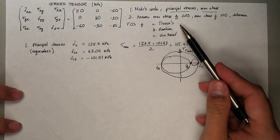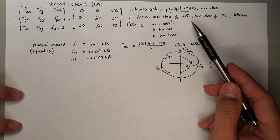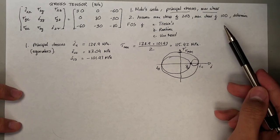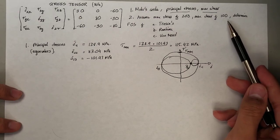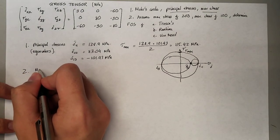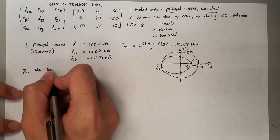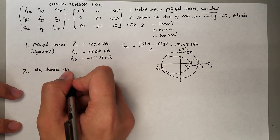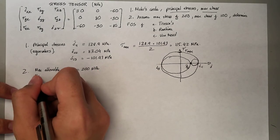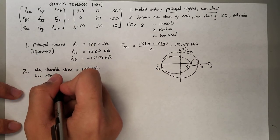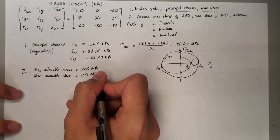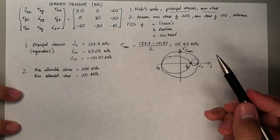In the second part of this problem, you are asked to determine the factor of safety for three different formulations. The maximum allowable stress is 200 MPa and the maximum allowable shear stress is 100 MPa.